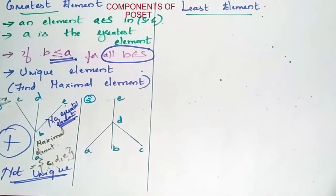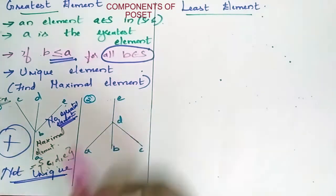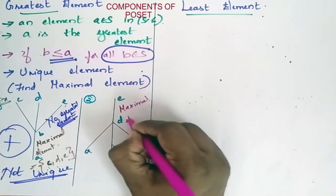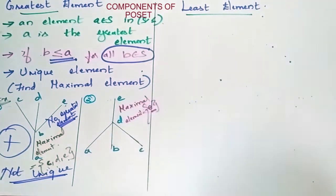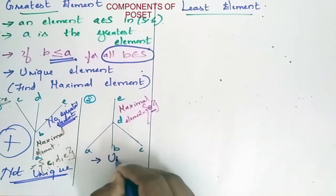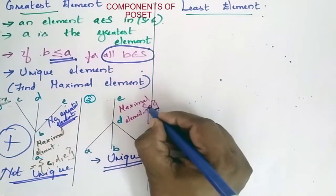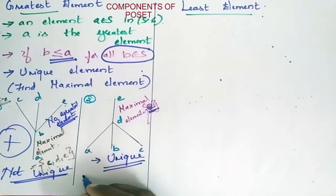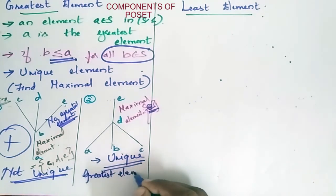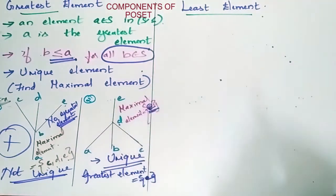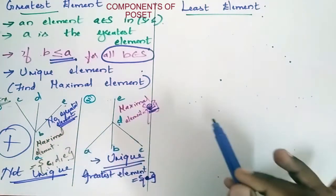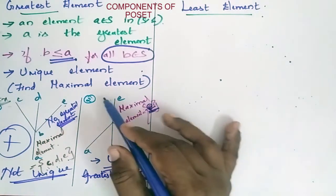Next example: you have A, B, C, D, and E. The maximal element here is the topmost element, which is E — a single unique element. So the greatest element here is E, because no other element in this Hasse diagram is greater than E based on the given relation.